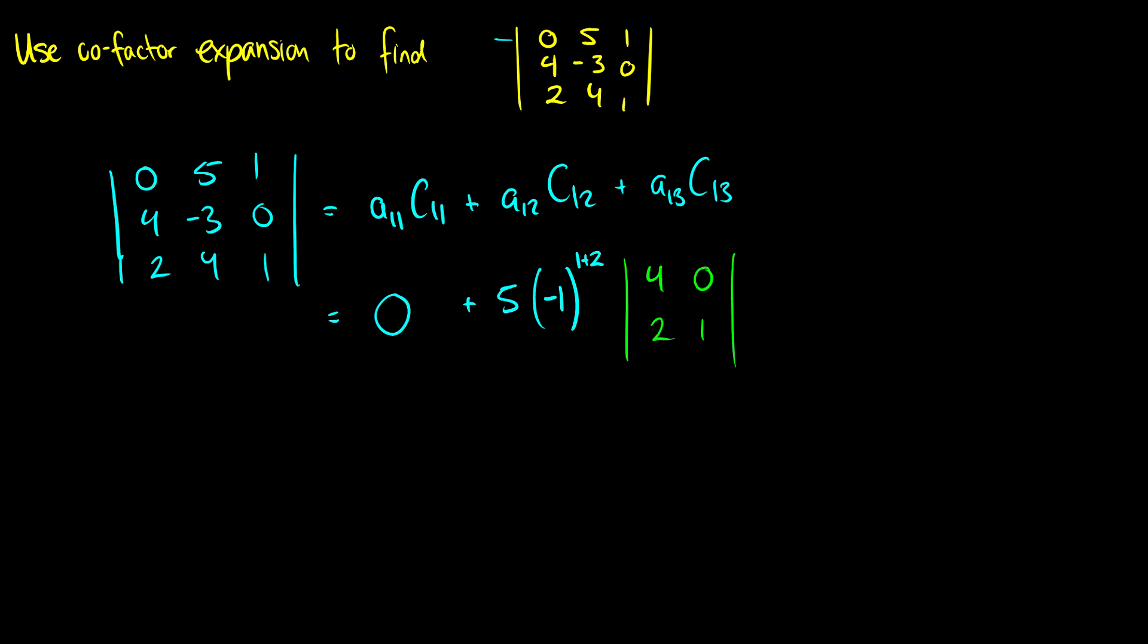Finally, we're going to add A13. A13 is just 1. C13 is negative 1 to the power of 1 plus 3. Then we multiply by the submatrix A13, so that's not the first row, not the third column. We're left with 4, negative 3, 2, and 4.